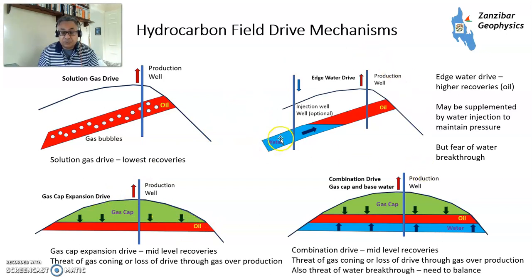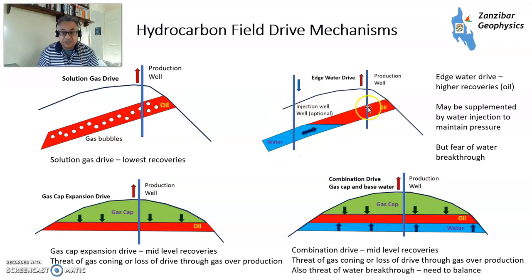This is a good one — we have edge water, a big aquifer, and that gives you pressure support. This is quite often where you have pressure support from water injection: a water injector pumping down water keeping pressure high, and an oil producer here. And then you have a combination drive where you've got a gas cap and a water leg underneath, squeezing the oil.